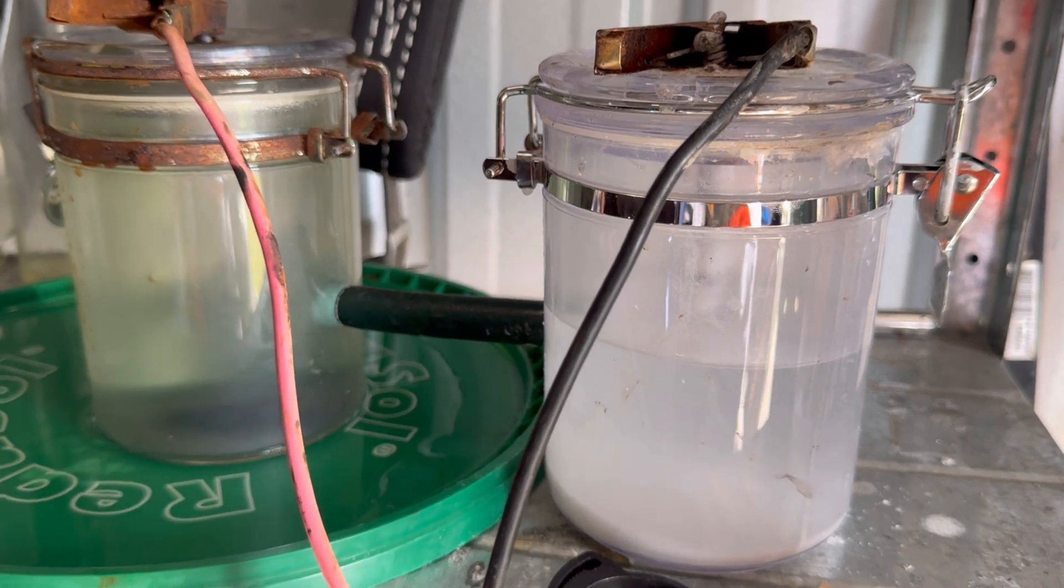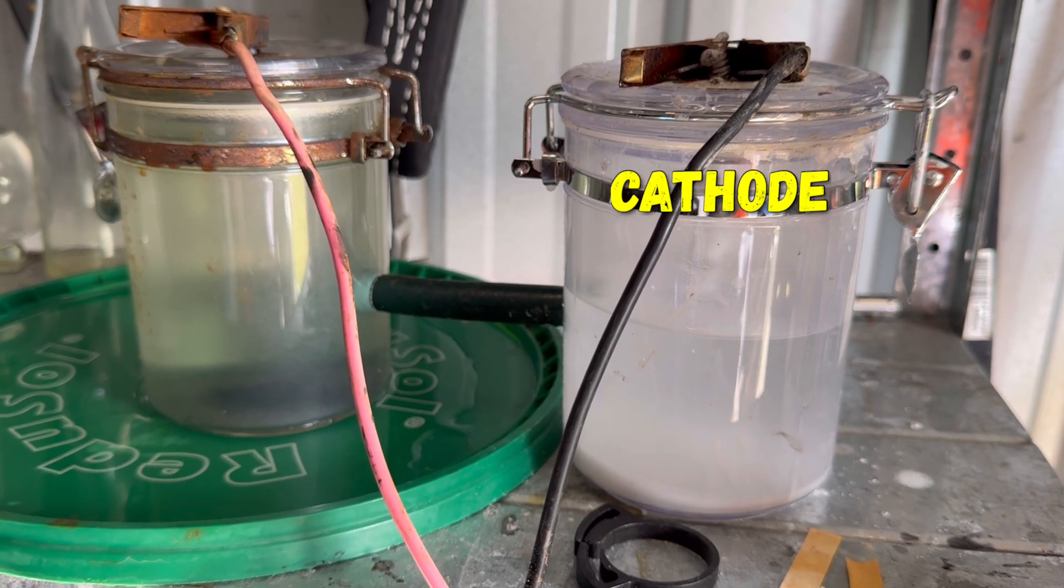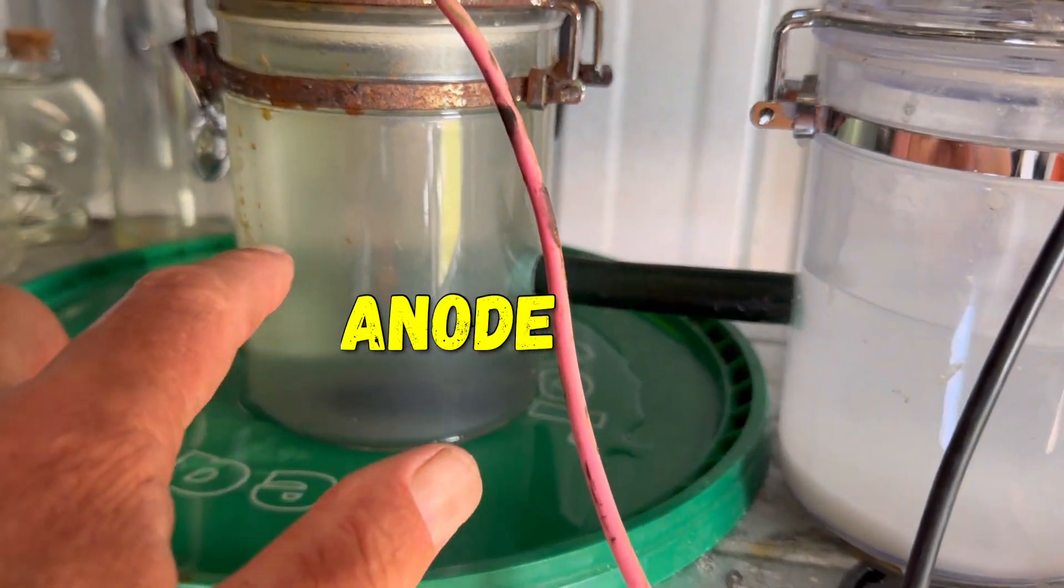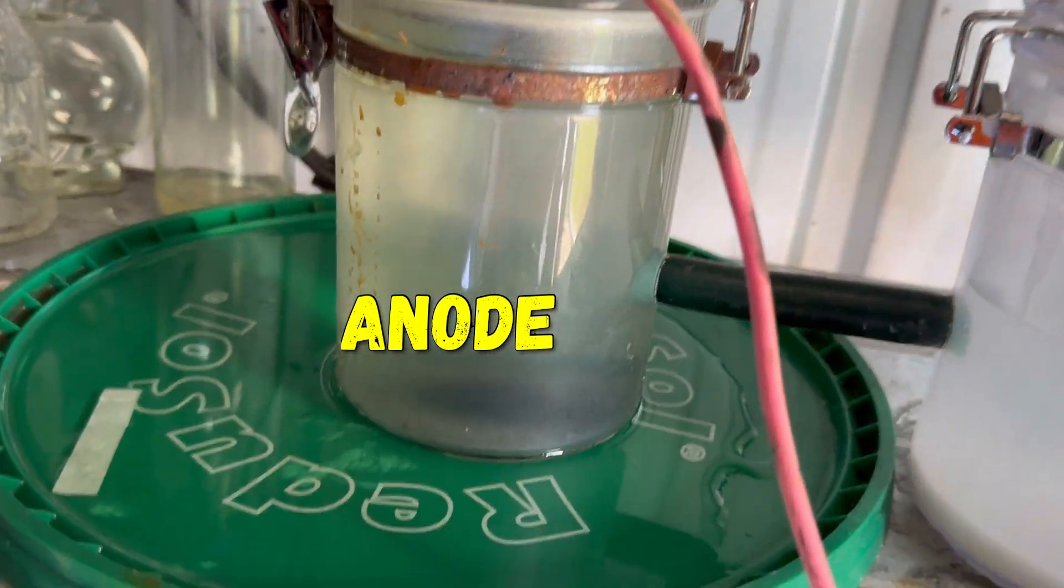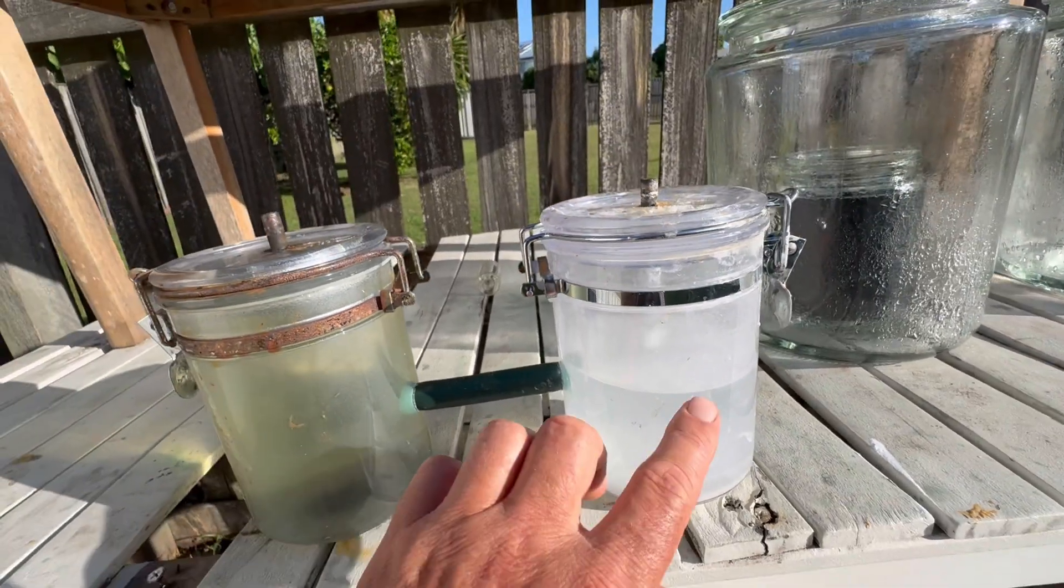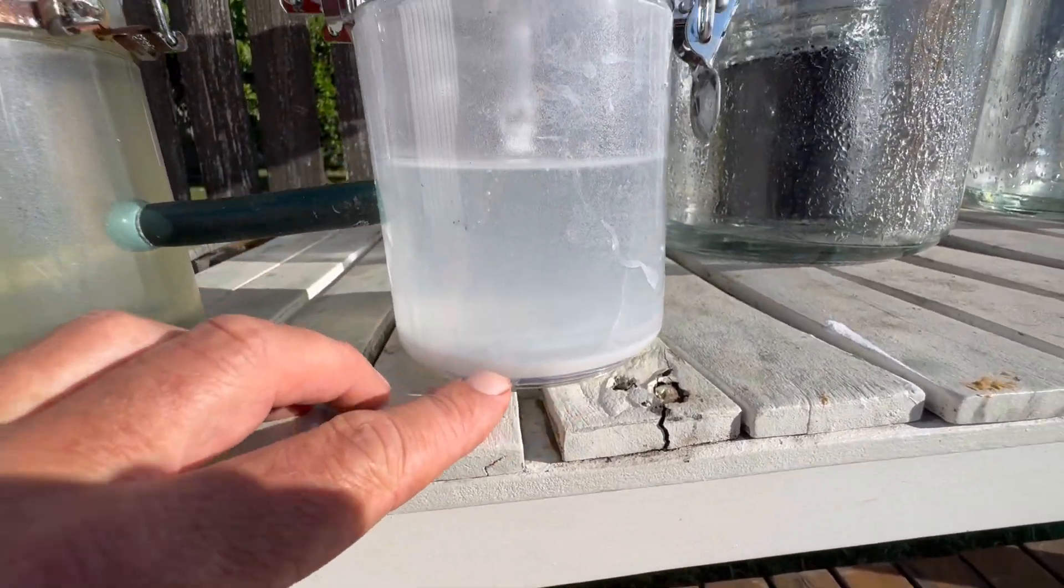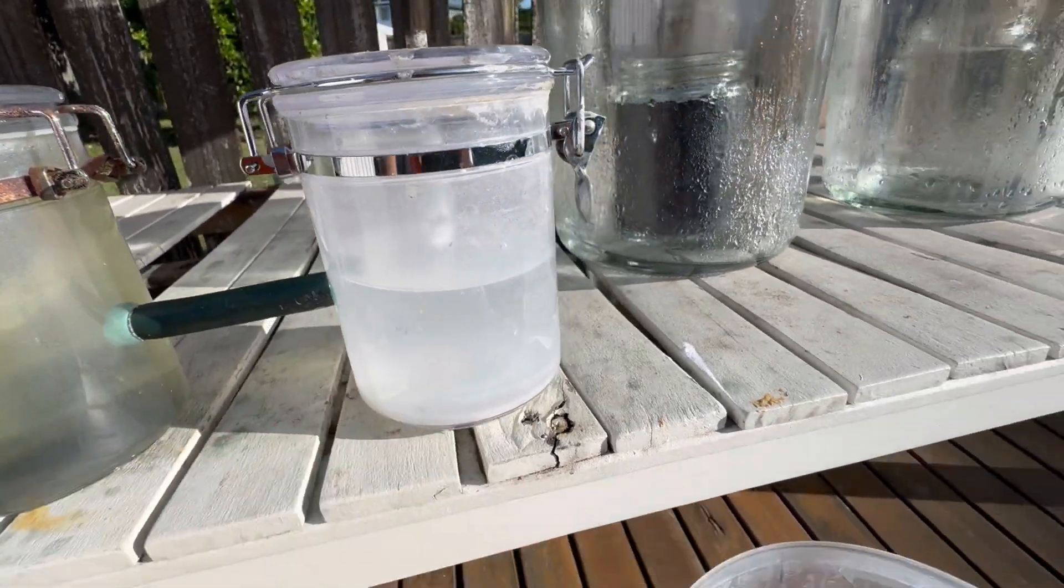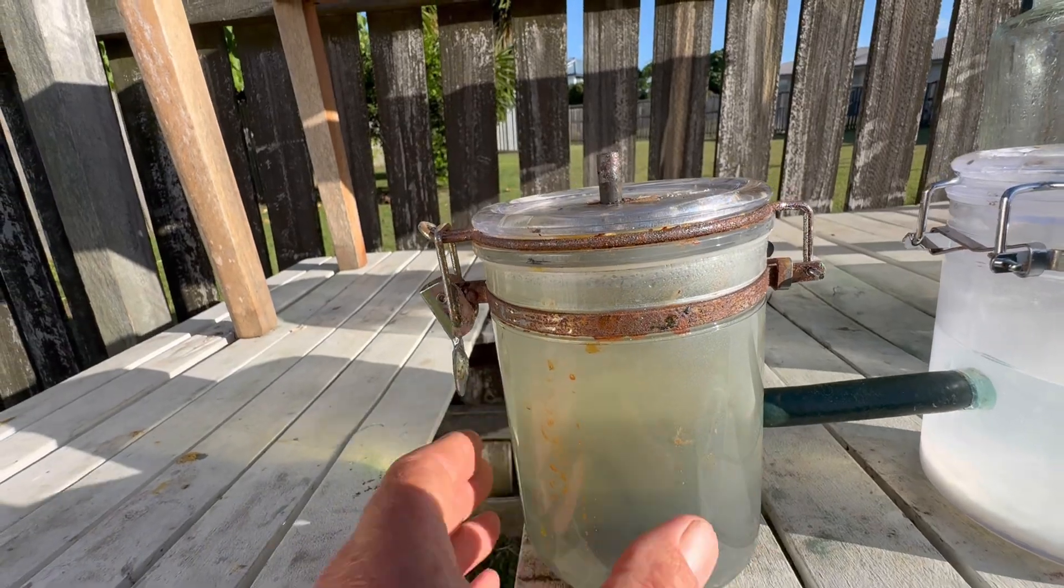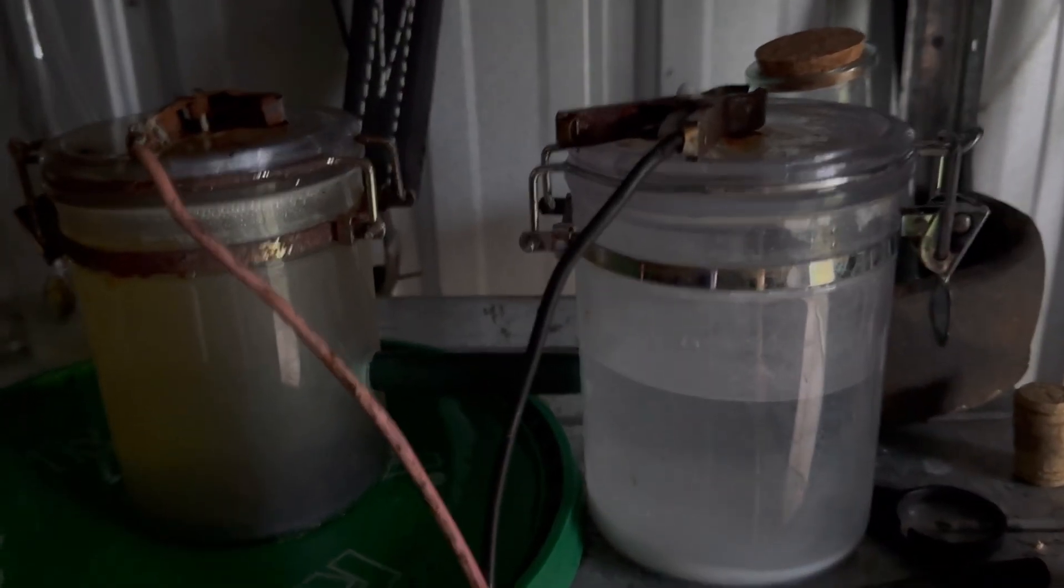Every time I let the system run for two to three days, the cathode jar would start draining even though it was sealed. The anode meanwhile stayed full. Eventually the cathode would empty all the way down to the tip of the electrode, which meant no more reaction. I raised the anode jar higher than the cathode thinking gravity was the cause. It didn't stop it, so I knew it was something else.